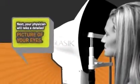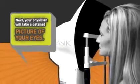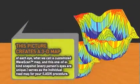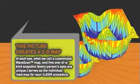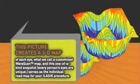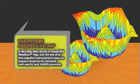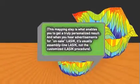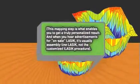Next, your physician will take a detailed picture of your eyes. This picture creates a 3D map of each eye, what we call a customized wave scan. And this one-of-a-kind snapshot serves as the individual roadmap for your iLASIK procedure. This mapping step is what enables you to get a truly personalized result.